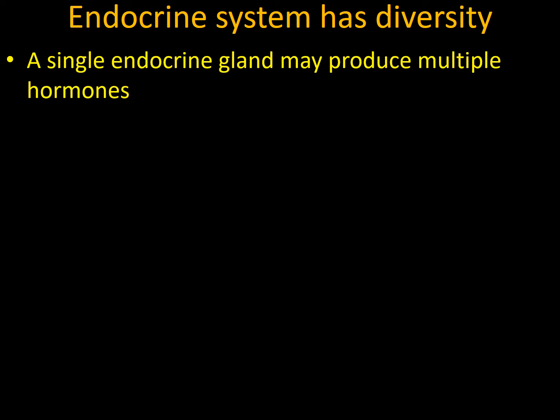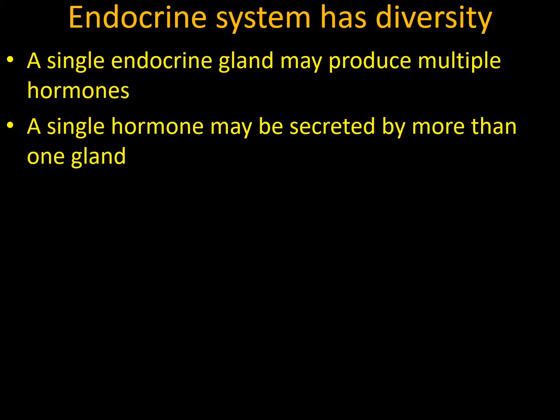The endocrine system has diversity, which can be proved by many aspects. For example, the anterior pituitary secretes six different hormones, each under a different control mechanism with distinct functions. Also, a single hormone may be secreted by more than one gland — for example, both the hypothalamus and the pancreas secrete somatostatin.